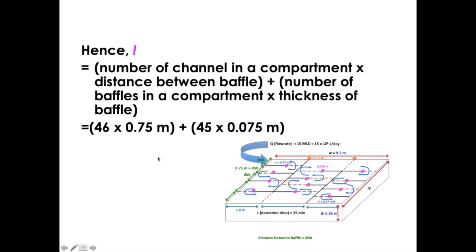And if you do this simple calculation or simple arithmetic, we will get the answer or the length of this hydraulic flocculation tank to be 37.875 meters, and that can be rounded out to 38 meters.